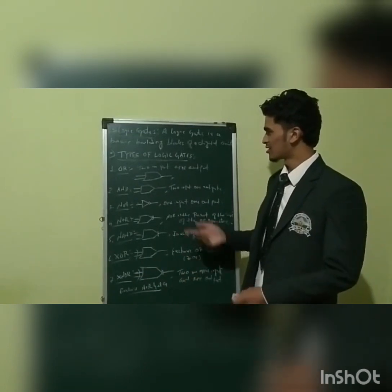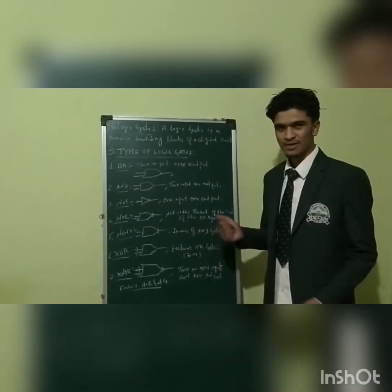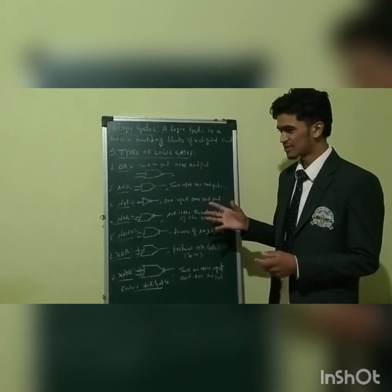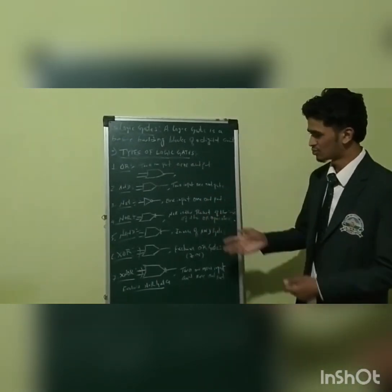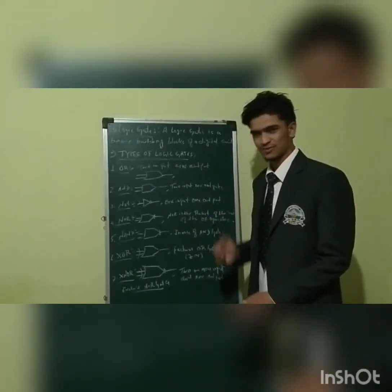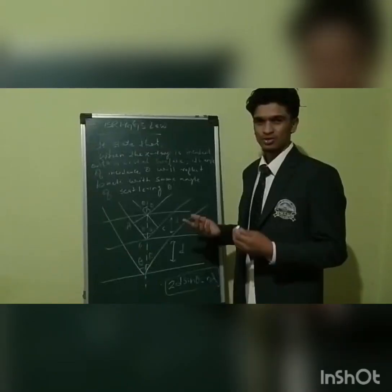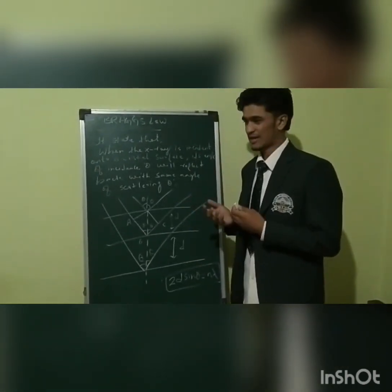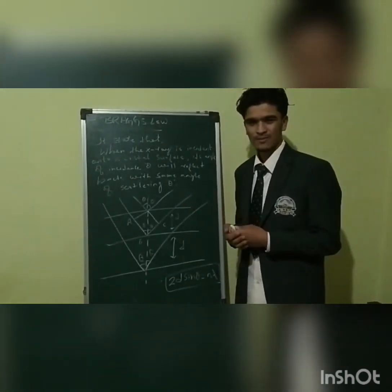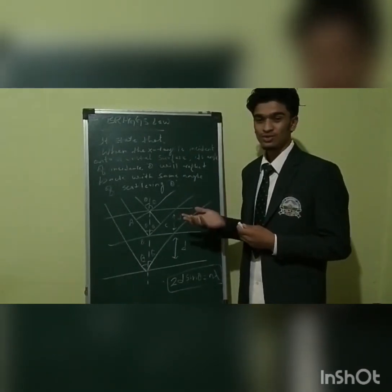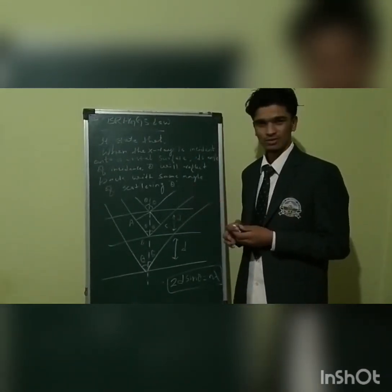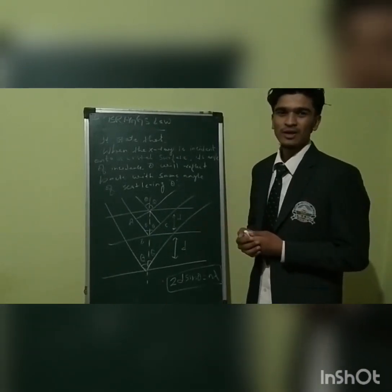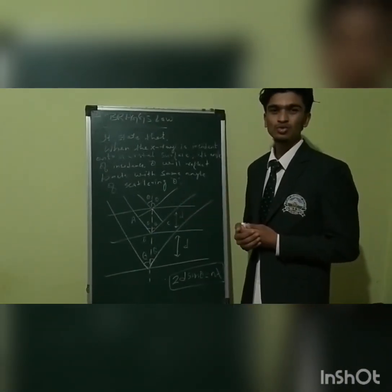Basically, logic gates are of many types, but the basic logic gates are categorized into seven types. Now the second topic is Bragg's law. First of all, WC Röntgen is the founder and inventor of X-rays.